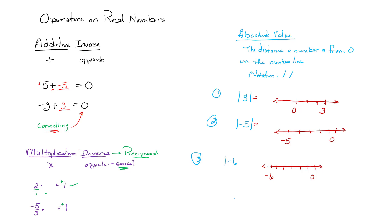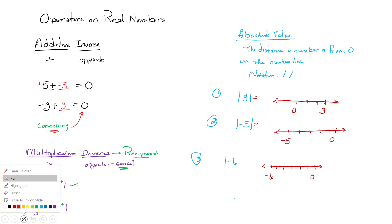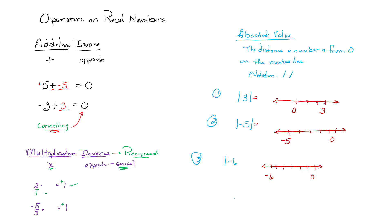Now let's talk about multiplicative inverse. Same idea, however, instead of using addition we are going to be using multiplication. I'm still talking about the opposite, which means I'm still talking about canceling. When we're talking about multiplying, we are not talking about changing the sign of the number like we did in additive inverse. What we are talking about is finding the reciprocal of the number.